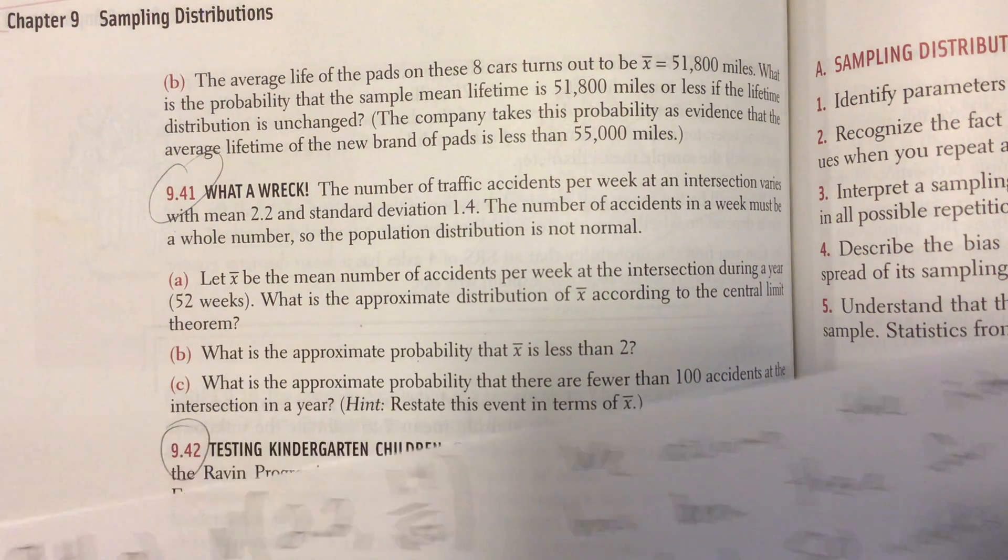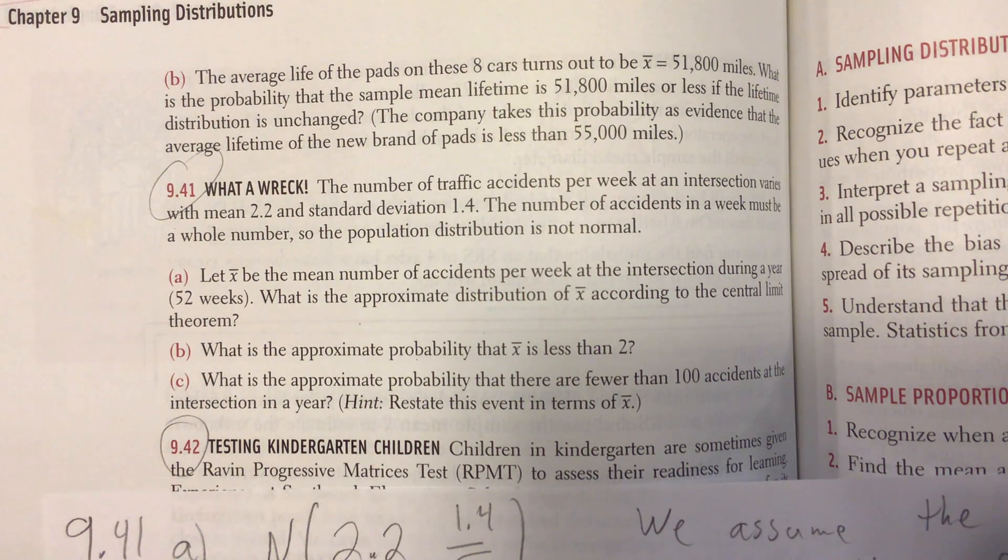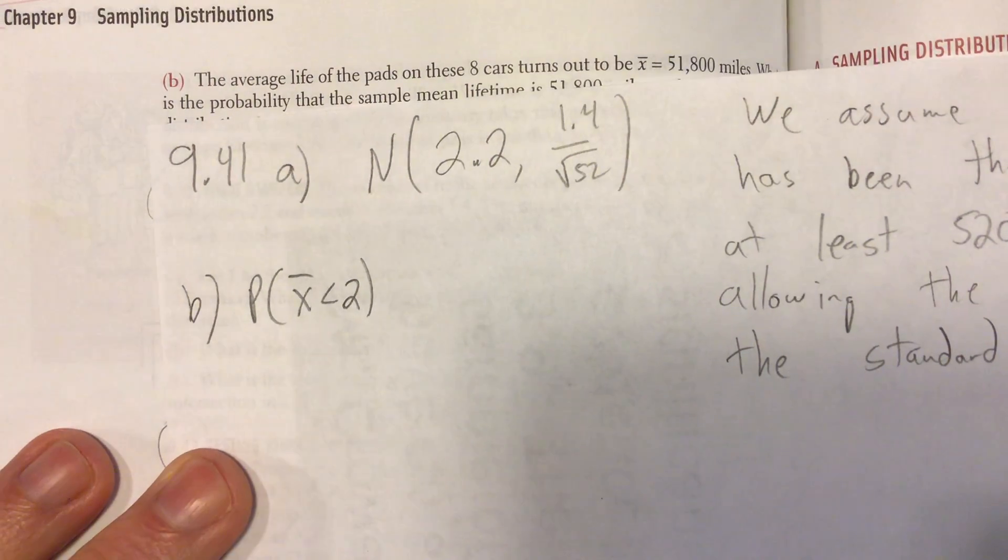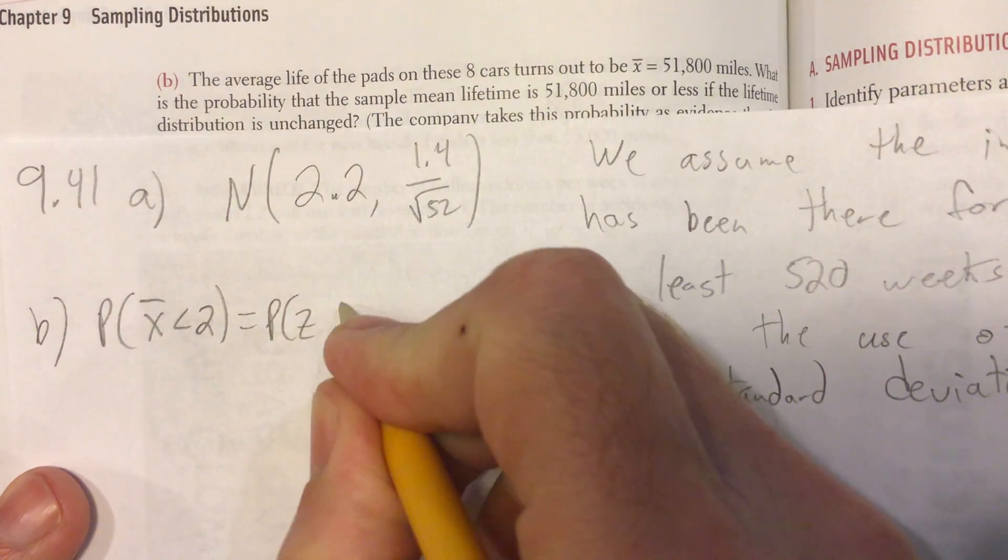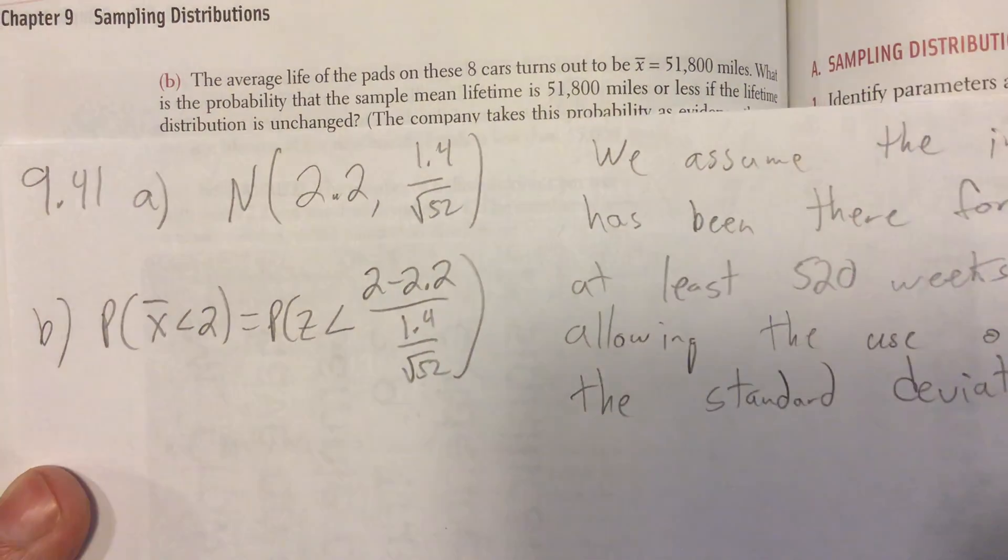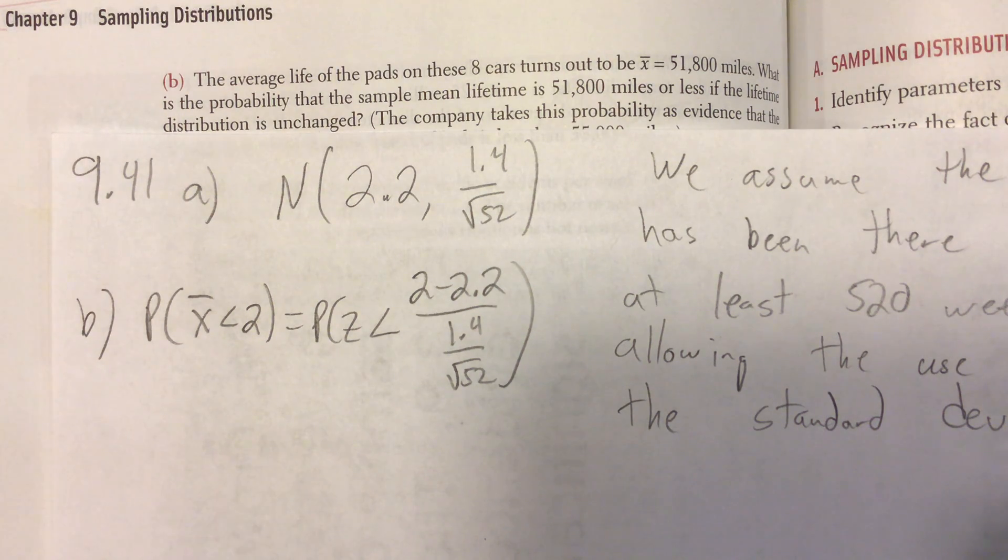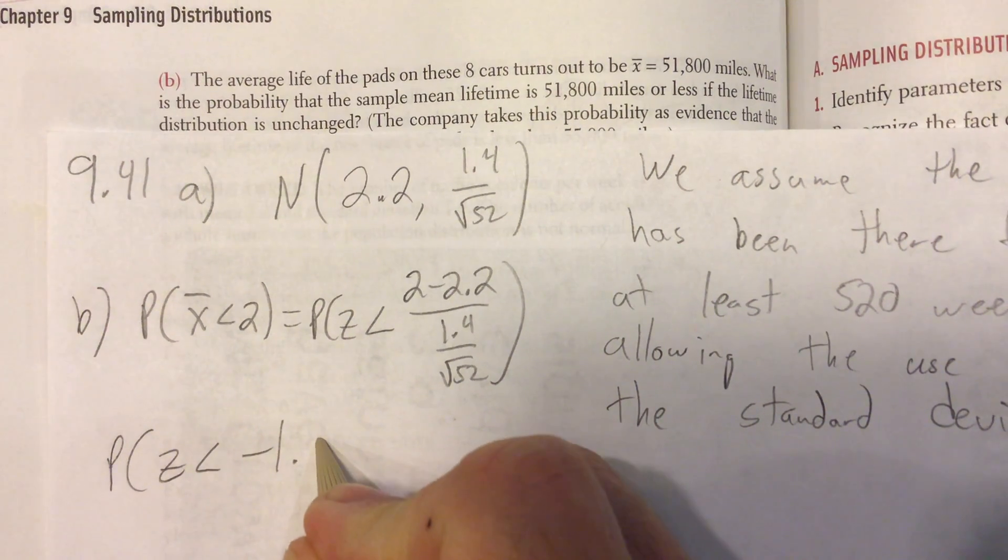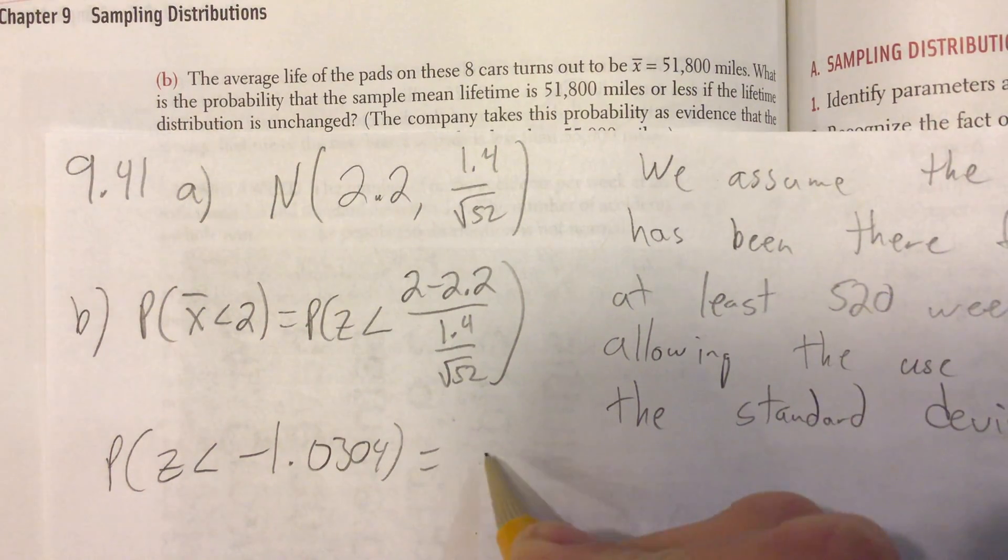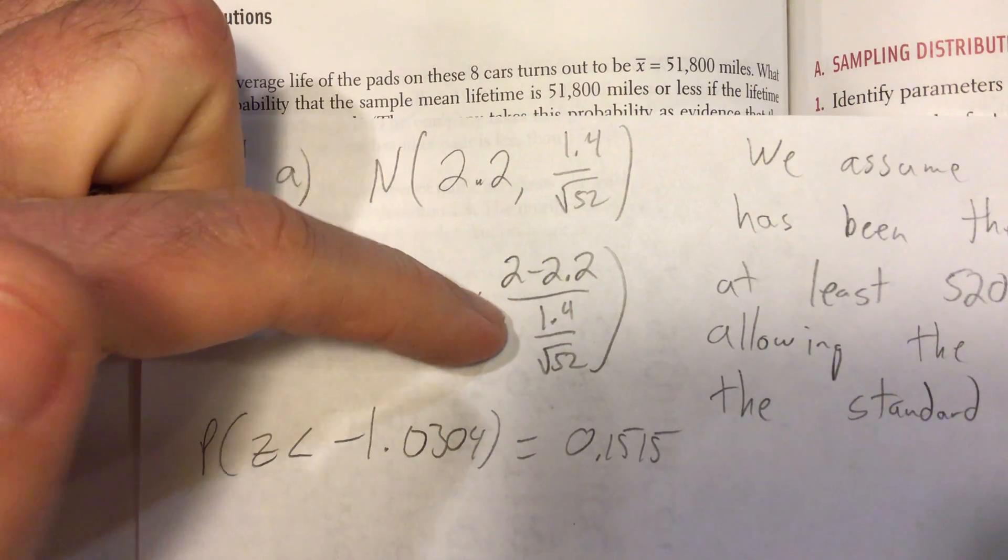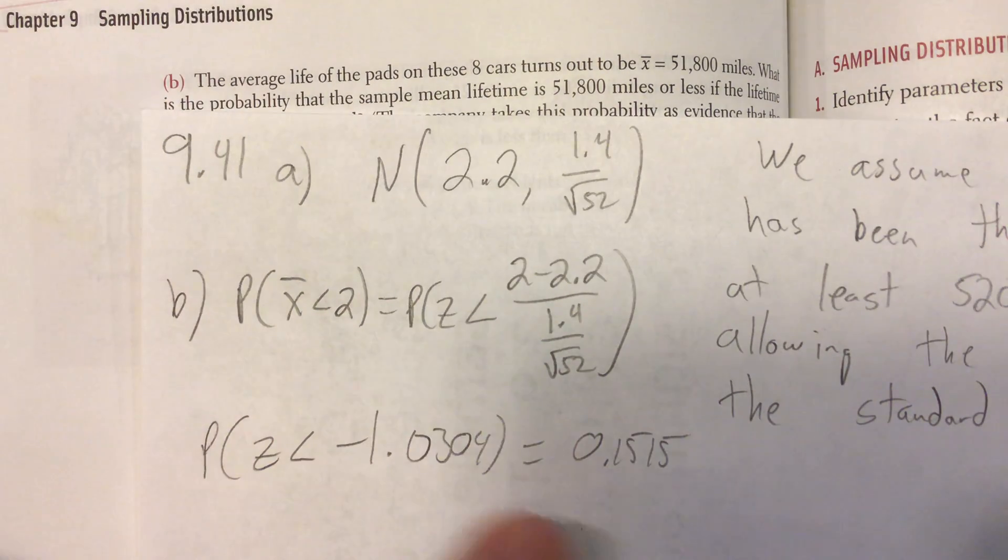Letter B: What is the approximate probability that X bar is less than 2? Get a Z score. That Z score should be negative 1.034, yielding a probability of 0.1515. Again, feel free to check that with your calculator. This is the correct work, so that's really all you got to show.